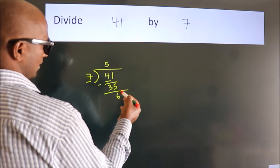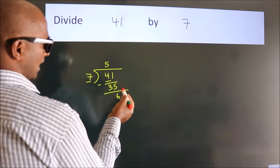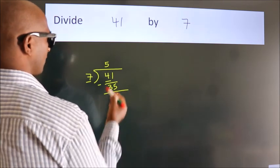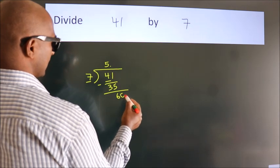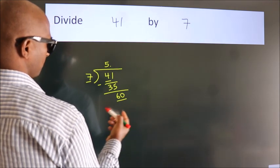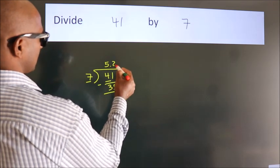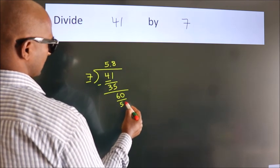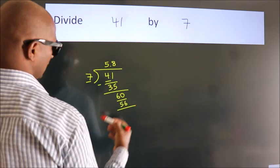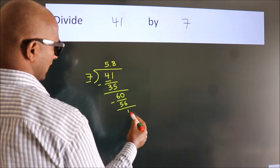After this, no more numbers to bring down. So what we do is put a dot and take 0. So 60. A number close to 60 in the 7 table is 7 eights, 56. Now we subtract. We get 4.